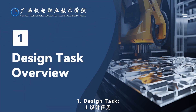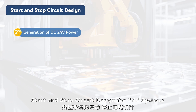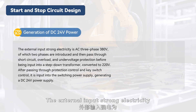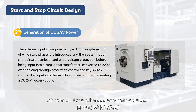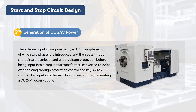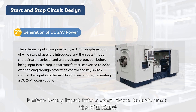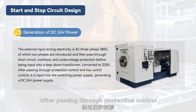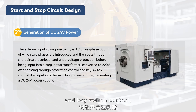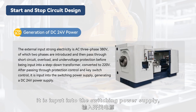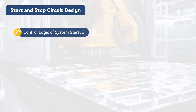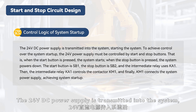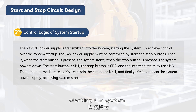Design task: Start and stop circuit design for CNC systems. The external input strong electricity is AC 3-phase 380 volts, of which two phases are introduced and then passed through short circuit, overload, and under-voltage protection before being input into a step-down transformer, converted to 220 volts. After passing through protection control and key switch control, it is input into the switching power supply, generating a DC 24 volts power supply. The 24 volts DC power supply is then transmitted into the system, starting the system.